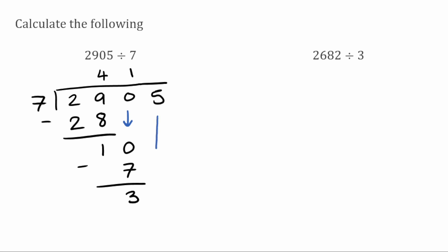I'm now going to bring down my final digit. So bringing down the 5, I've now got 35. So I want to see how many times does 7 go into 35. Well, that will go 5 times because 7 times 5 is 35. So when we subtract them, we're left with 0. So we have no remainder. So our answer to 2,905 divided by 7 is 415.